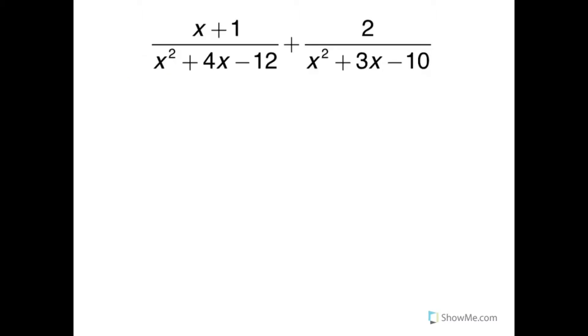Well, finally, let's try one where we have to factor the denominators before we start. So x plus 1 is over x squared plus 4x minus 12. And we're adding that to 2 over x squared plus 3x minus 10.